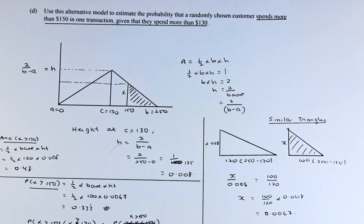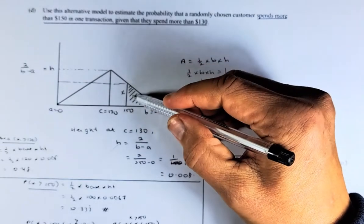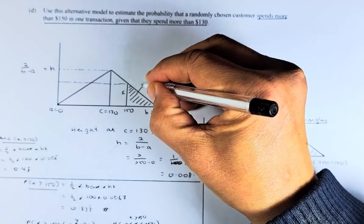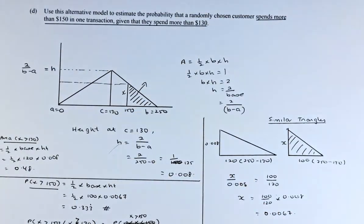Question 3D is as follows: Use this alternative model, which is a triangular distribution, to estimate the probability that a randomly chosen customer spends more than $1.50 in one transaction, given that they spend more than $1.30.